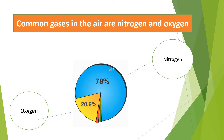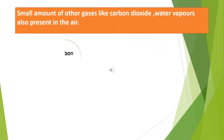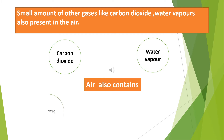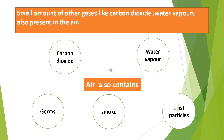Common gases in the air are nitrogen and oxygen. By volume, nitrogen is 78% and oxygen is about 21%. Together these two gases make 99% of the volume of the atmosphere. Small amounts of other gases like carbon dioxide and water vapour are also present in the air.